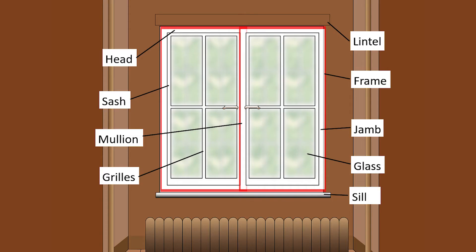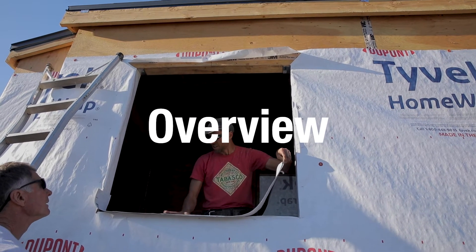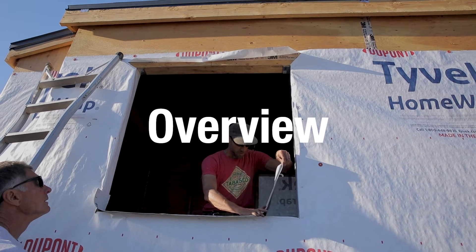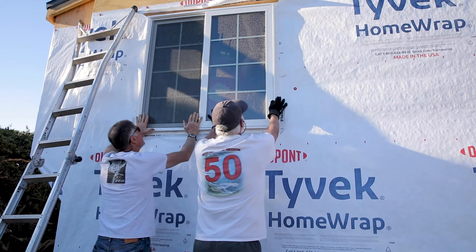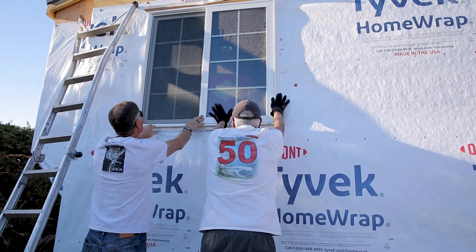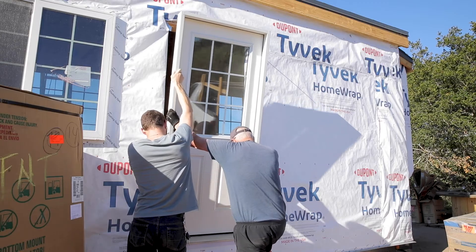Before we begin today, I also want to make sure you understand the terminology we'll be using as we install the windows and doors. The head of the window is the top, the jambs are the sides, and the sill is the bottom. We will be using these terms quite often. We will install the four windows following the manufacturer's instructions precisely, since windows are a primary source of water damage and have to be installed carefully. We will then install the two doors.